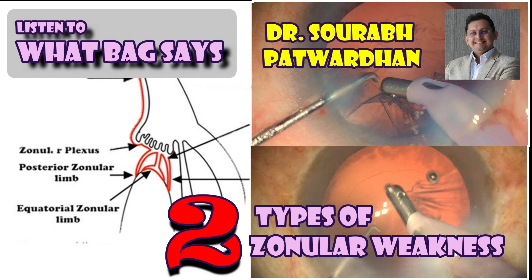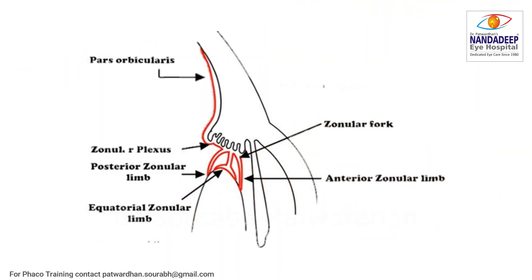I am not going to talk about the frank zonular dialysis, but this is a very important video which will help you in your surgeries. As you know the anatomy of zonules, there are mainly the anterior zonular limb which is pre-equatorial, and there is a posterior zonular limb which is post-equatorial. Also there are some equatorial fibers there.